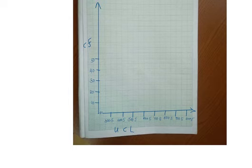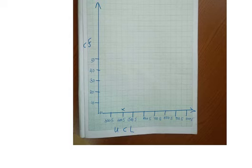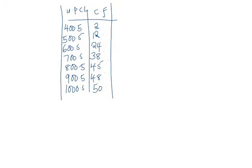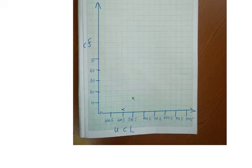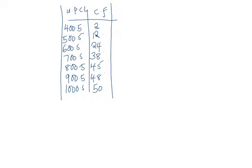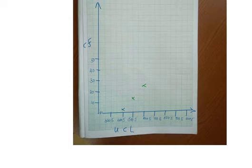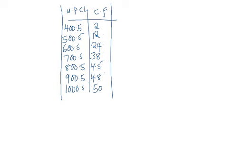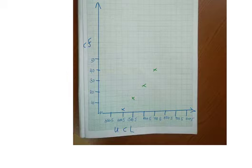We plot 400.5 against cumulative frequency 2, which is somewhere here. Then we have 500.5 against 12, and we have 12 here. Then 600.5 against 24, and 24 is somewhere there. We have 700.5 against 38, somewhere there. Then 800.5 against 45, and 45 is here.